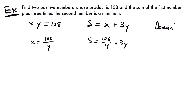So our domain starts with an open interval from zero — not including zero but including values after it. What would be the largest value y could be? If we think about it, we could pick larger and larger values of y and still pick a smaller value of x to maintain a product of 108. For example, y equals 216 and x equals one half gives 108. You could keep picking higher values of y and smaller fractional values of x, so actually there's no upper limit. The domain is the open interval from zero to infinity.